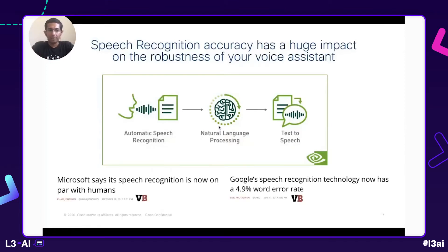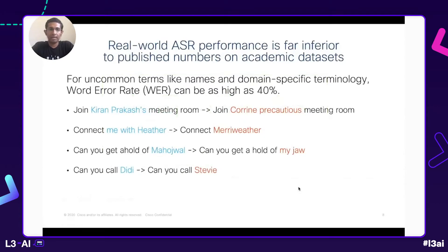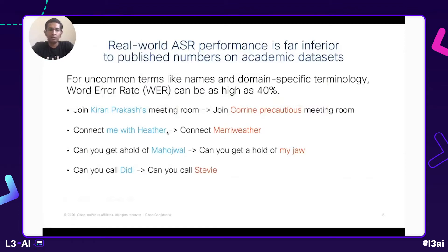Many of you may have seen headlines suggesting that speech recognition is an already-solved technology. Unfortunately, the reality is quite different. What we've observed in our real-world applications is that the word error rate — the metric by which ASR quality is measured — can be far higher than the sub-5% numbers that are often reported on well-studied academic datasets. Off-the-shelf ASR services like those from Google, Microsoft, or Amazon often make a lot of mistakes on proper nouns and domain-specific terminology, and these errors are only exacerbated in the real world when dealing with users with diverse accents or non-ideal acoustic environments. Any of these errors will cause your assistant to take an unsatisfactory action because the main entity of interest has been lost in the ASR output. So clearly we need to come up with some techniques to overcome these mistakes.